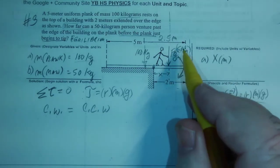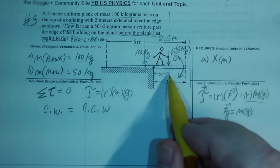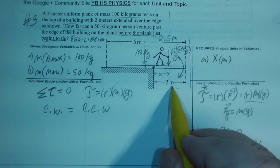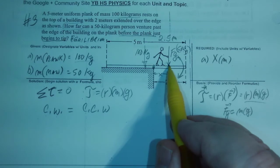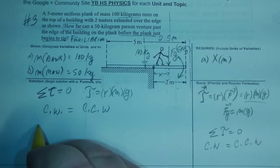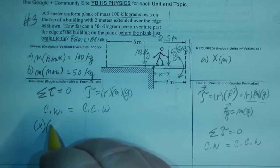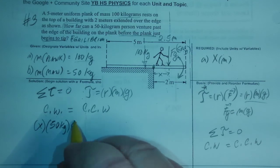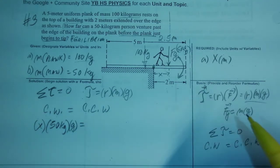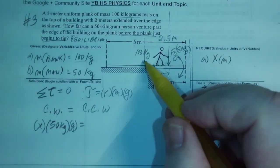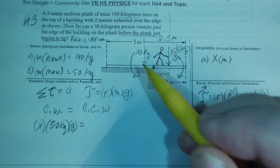So let's write that down. We have the distance of the man is x in meters, and the mass is 50 kilograms times g is equal to... this one will be going this way, and that is counterclockwise.